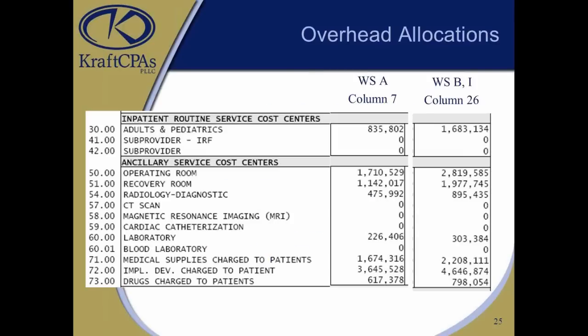Once we've gotten through cost-finding, slide 25 compares before and after. The first column from Worksheet A, column 7, is your allowable costs for revenue-producing departments — straight off the trial balance after reclassifications and adjustments. The far right column comes off Worksheet B, Part 1, column 26 — that same cost but with overhead allocations added. For line 30, adults and peds had $835,000 of direct costs; after overhead allocations — administrative and general, housekeeping, plant operations, medical records, etc. — it came out to $1.6 million, actually doubling the cost for that department.